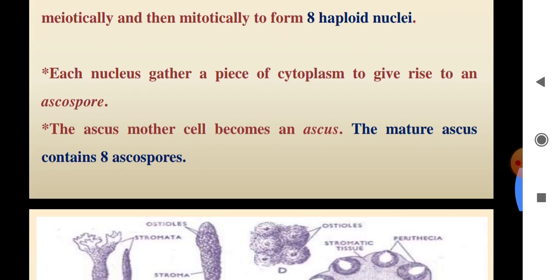The ascus mother cell then becomes the ascus. The mature ascus contains eight ascospores, each haploid.